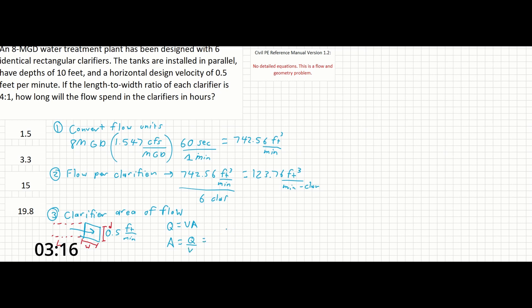we can see that 123.76 cubic feet per minute per clarifier divided by 0.5 feet per minute will give us